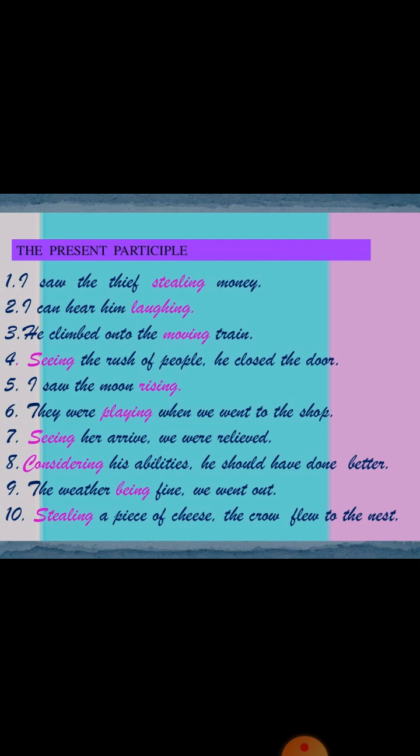The present participle: 'I saw the thief stealing money.' 'Stealing' is a non-finite verb, shown in purple. 'I can hear him laughing.' In the first example, 'saw' is a finite verb because it agrees with subject 'I,' but 'stealing' does not agree with 'I.' Similarly, all the purple-colored words — stealing, laughing, moving, seeing, rising, playing, considering, being — are present participle non-finite verbs.